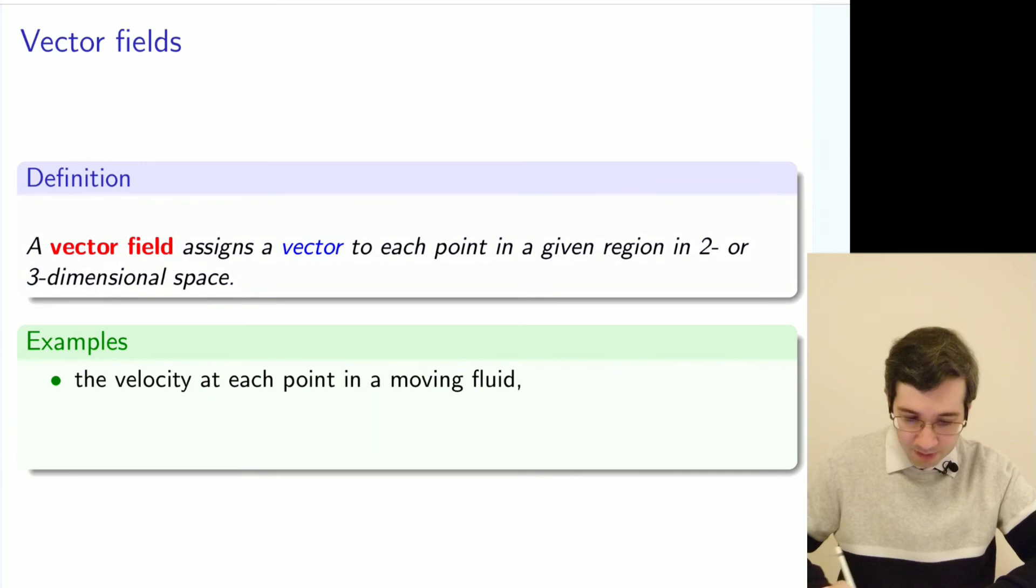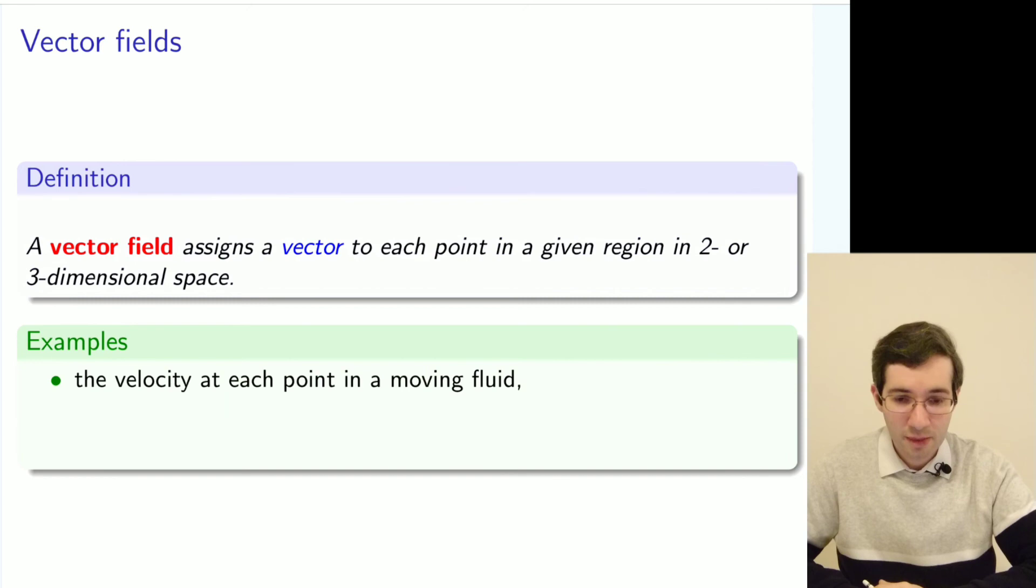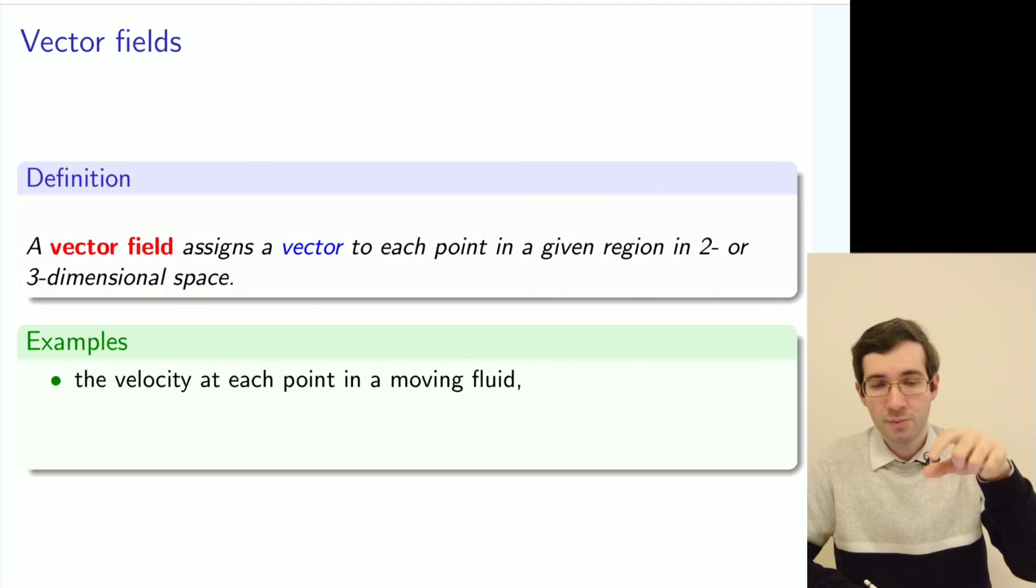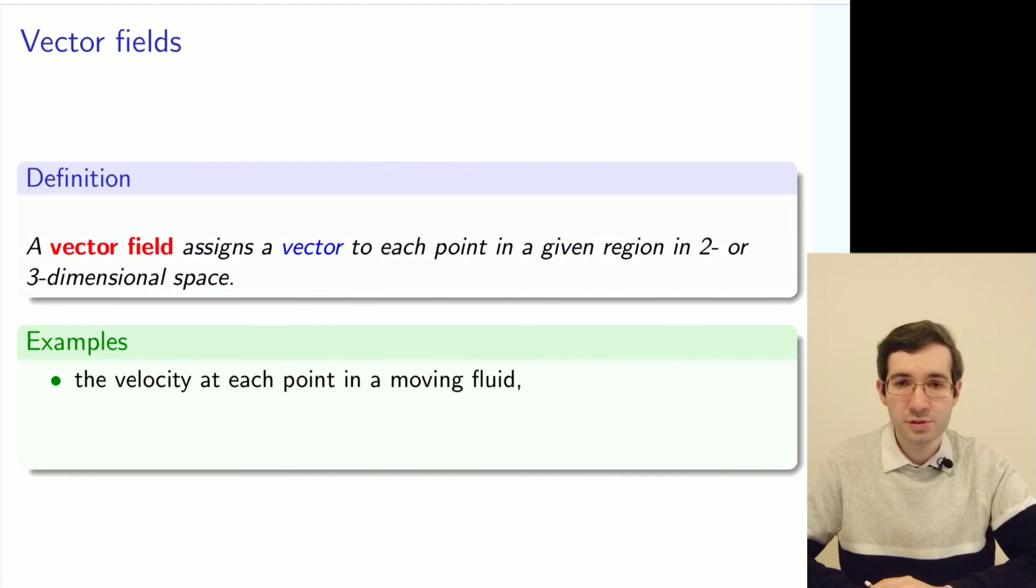Let's look at the example. Think of you want to predict the flow of a liquid. Then at every point you will have the velocity, and this velocity will be described by the vector field because it will be slightly different at different portions of this fluid.